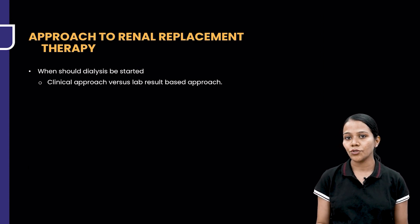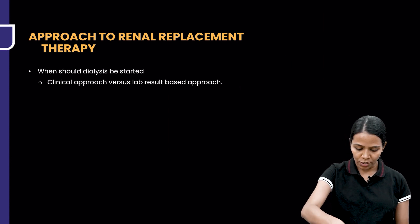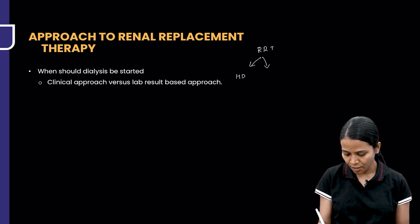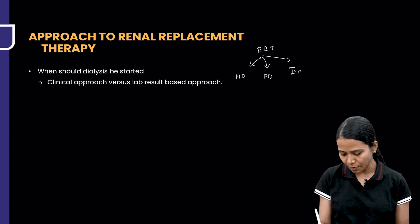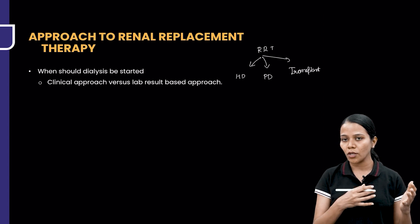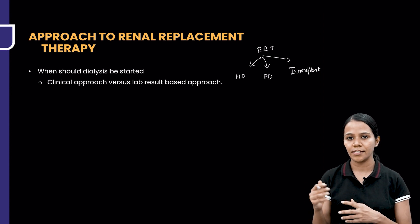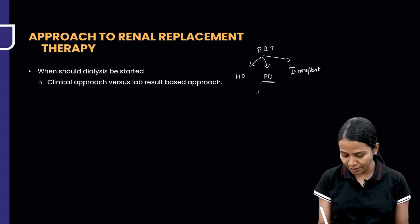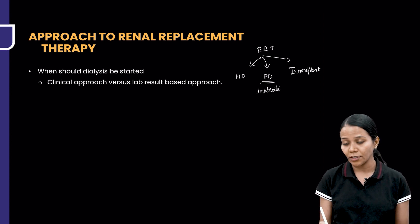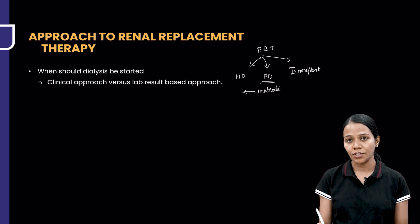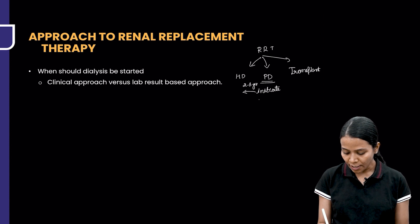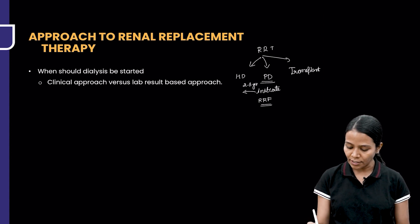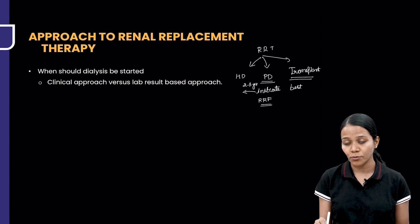Now, approach to renal replacement therapy — when should it be started? Renal replacement therapy can be classified into hemodialysis, peritoneal dialysis and transplant. While initiating dialysis, it is better to initiate on PD and then eventually convert to HD over 2 to 3 years — this is found to have the best outcome. In patients with good residual renal function, it is better to start PD than HD. Transplant is considered the best of all forms of renal replacement therapy.